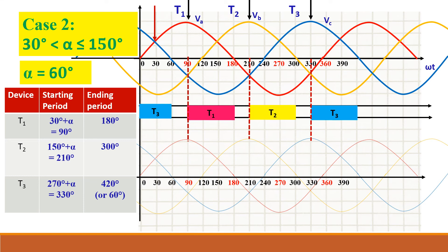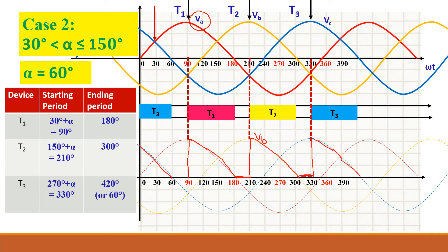To draw the waveform for Case 2: T1 is connected to VA, so follow the VA waveform until 180°. During the gap period, no device conducts so the output voltage is zero. T2 then conducts, so follow the VB waveform from 210° to 300°. Then another zero period, followed by the VC waveform for T3. This gives us the VA, VB, and VC segments with zero gaps in between.